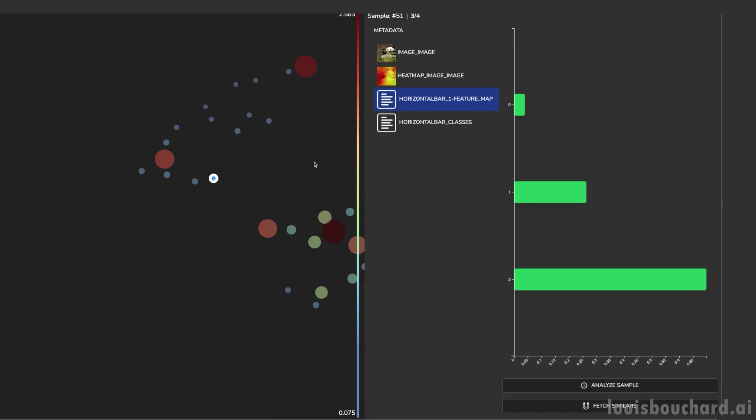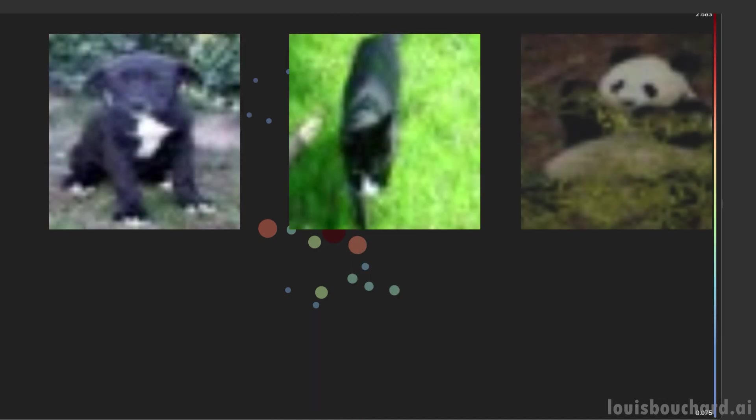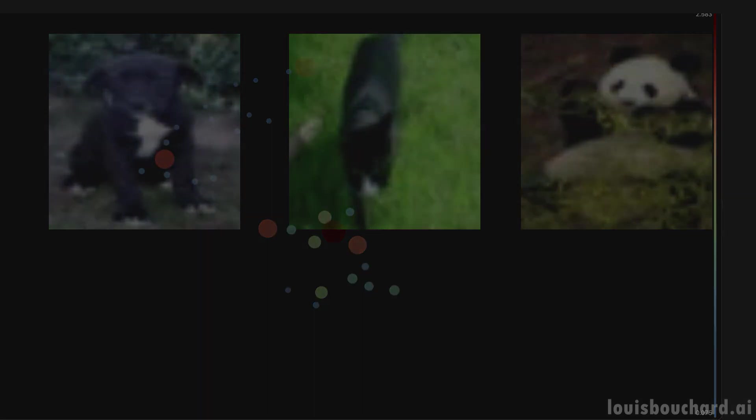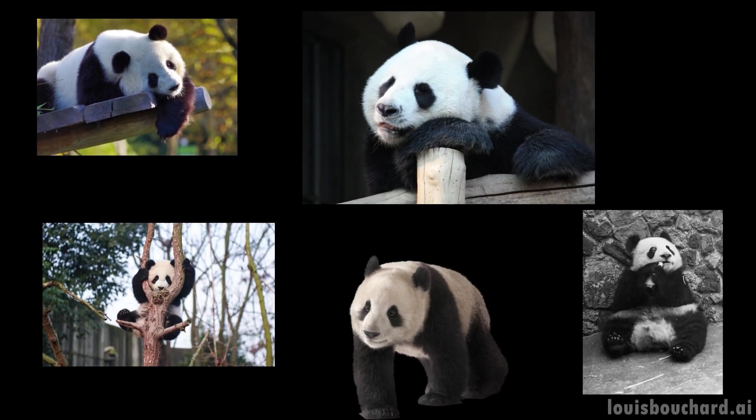Our model lacks the capacity to generalize and has learned from the contextual information that when there is green or grass in the sample, it's a panda. Now that we know that, we know our model needs to be improved. Probably because it lacked images of pandas in this case.